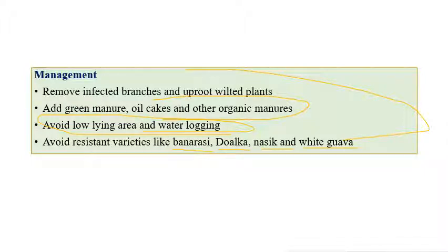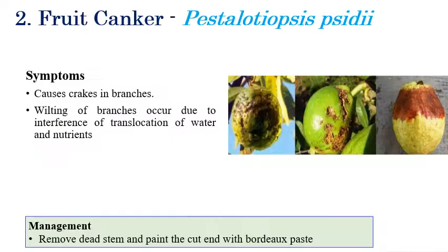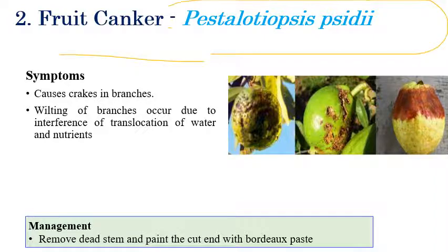Some resistant varieties are available — Banarasi Dolka, Nasik, and White Gourd are resistant varieties available against wilt. Coming to the second disease — fruit canker, which is caused by Pestalotiopsis sp. The name itself indicates that cankerous growth can be seen on fruits. Depressed spots can be seen on fruits.